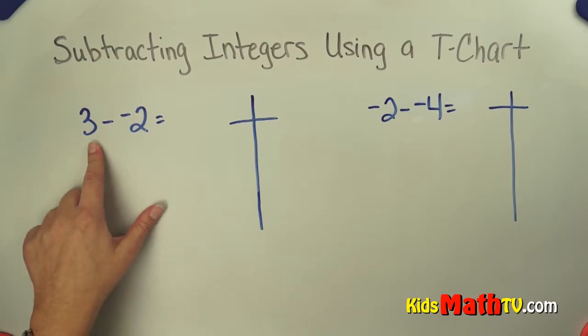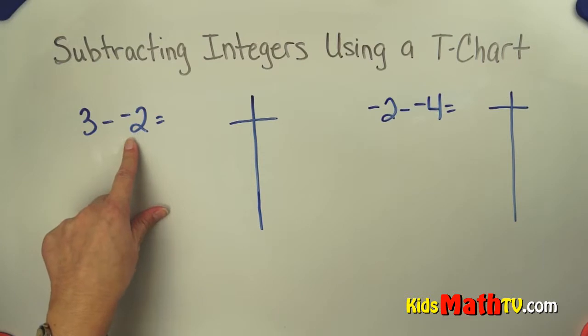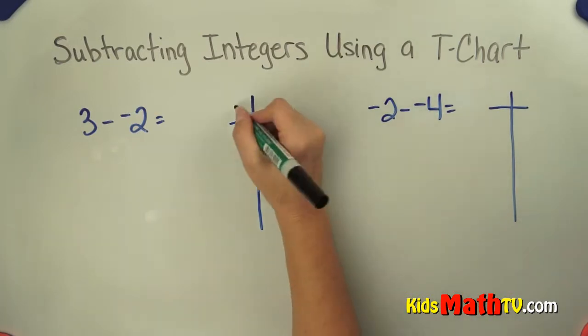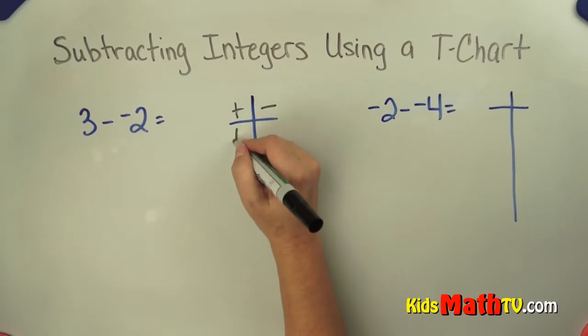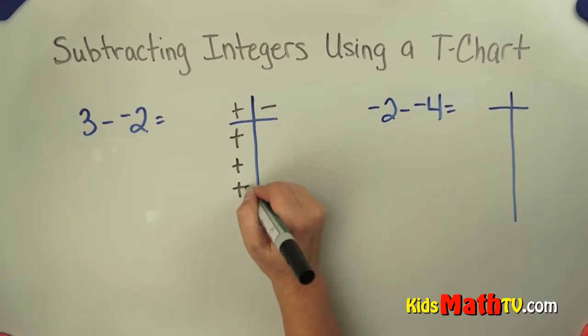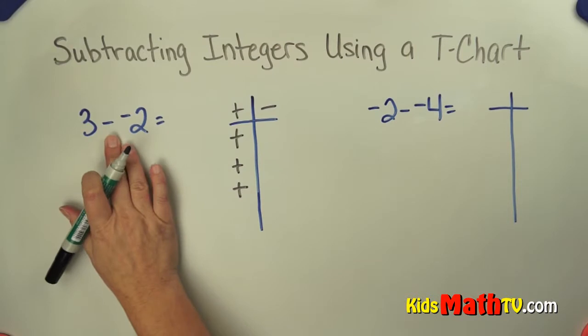We have 3 positives and we're going to take away 2 negatives. So I'm going to record my positives and my negatives. This says 3 positives, so that's what I'm starting with, and I have to take away 2 negatives.